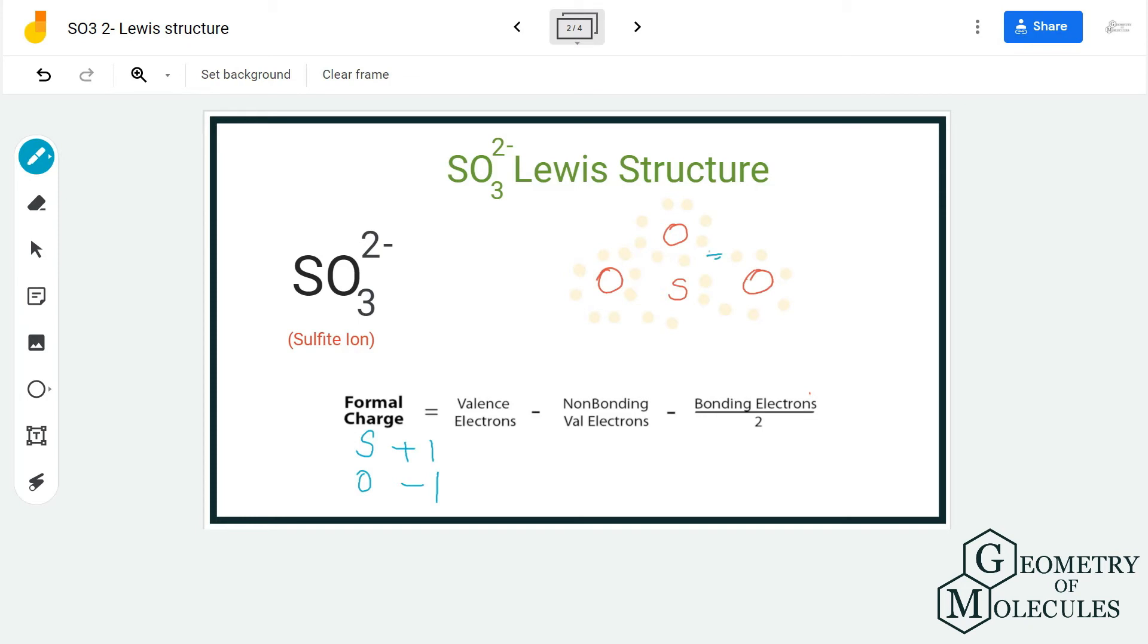So there is a +1 charge on sulfur and -1 charge on all oxygen atoms. Calculating the charges gives us -2, which is correct. However, it is better to have a structure in which atoms have zero formal charges to be more stable.